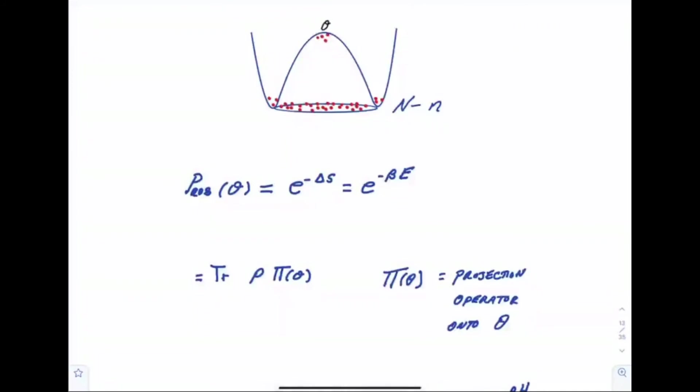The difference between that entropy and the entropy of the pure de Sitter space, or the entropy without the Boltzmann fluctuation, that is called delta S. And the probability for the fluctuation is just e to the minus delta S.